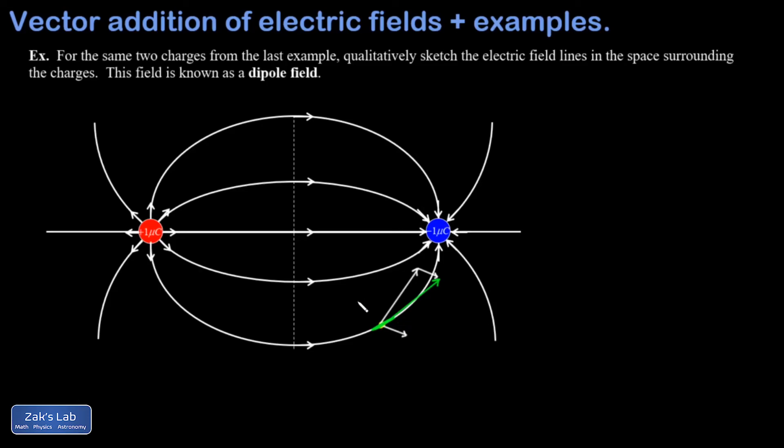I'm just going to do one more of these to make it clear how it works. I'm going to look at that point. And at that point, I would have a contribution pointing directly away from the positive charge and rather large. And I would have a contribution pointing directly at the negative charge, but rather small.